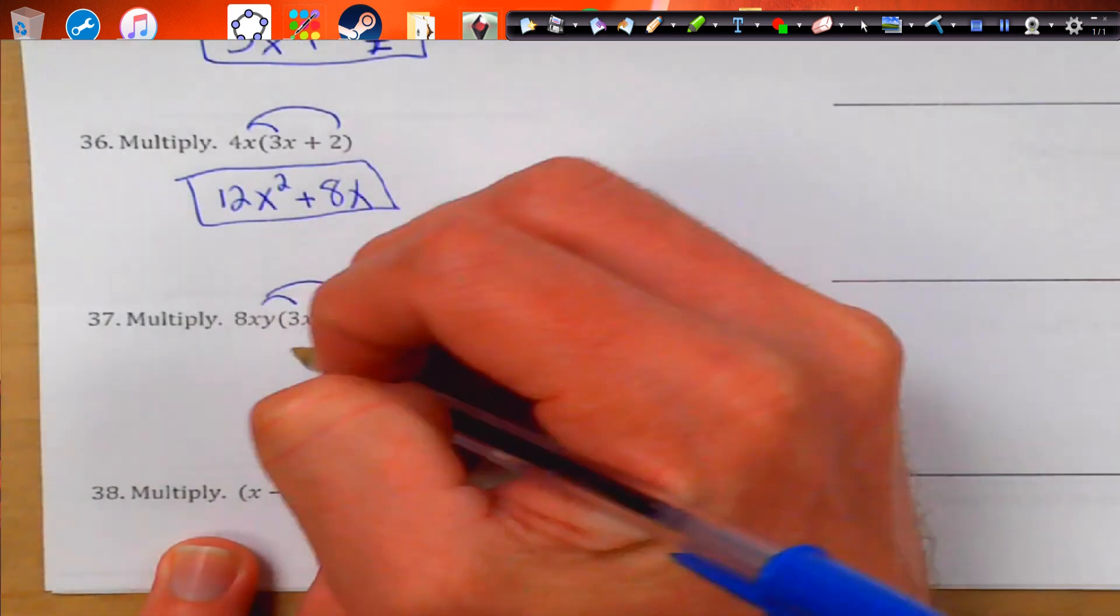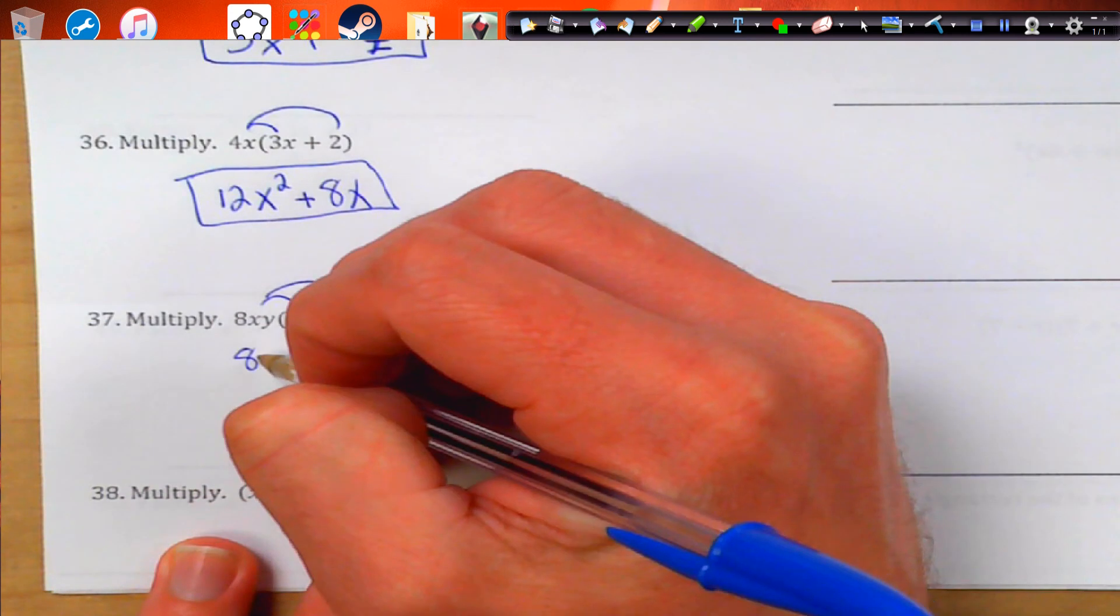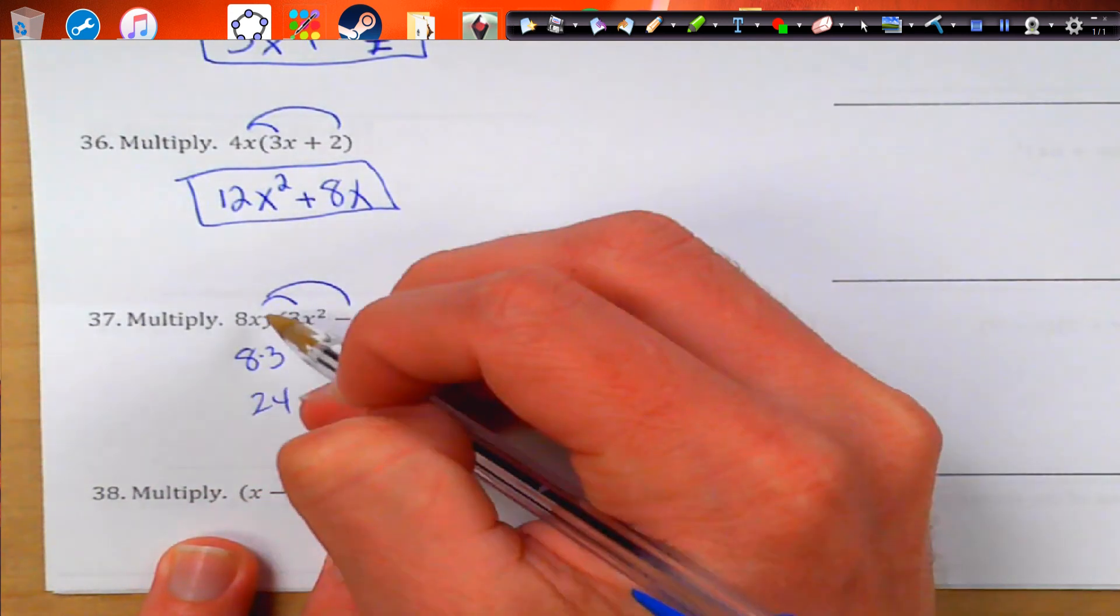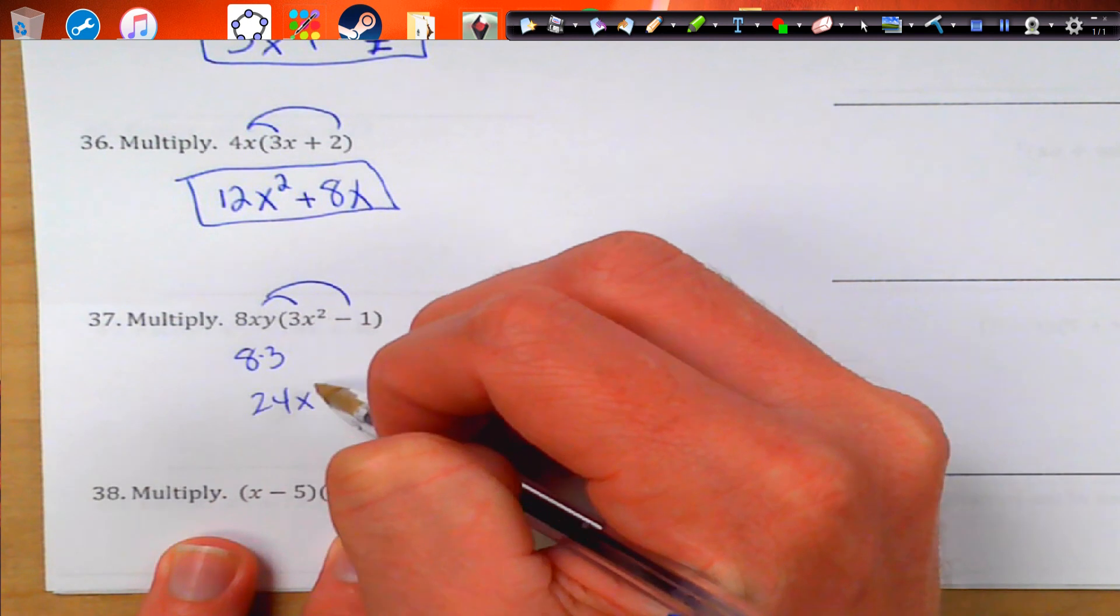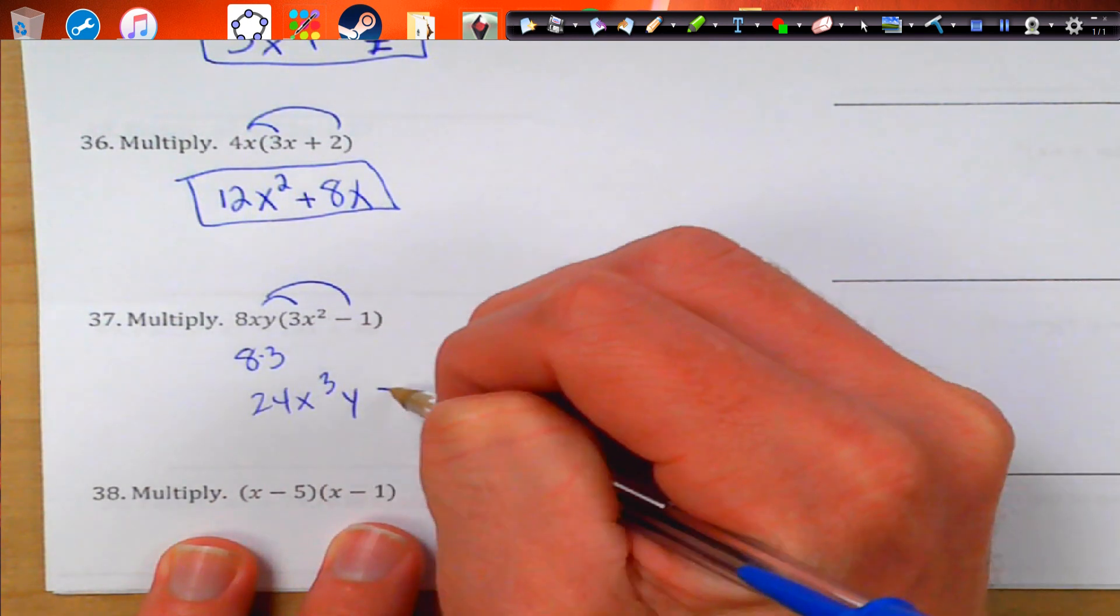Here we're going to distribute. We get 8 times 3, which is going to give me 24. And x times x squared is x to the 3rd y. And this is going to just be negative 8xy.